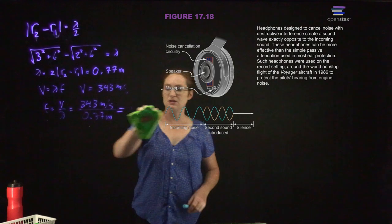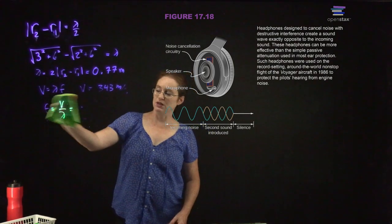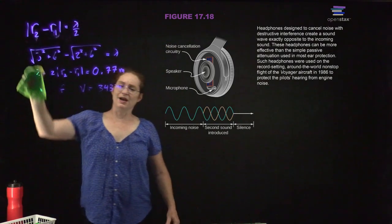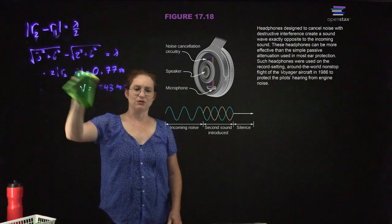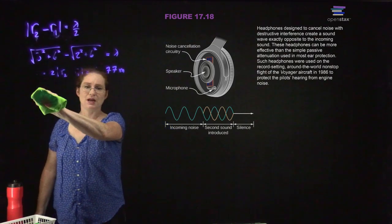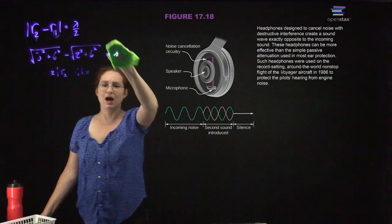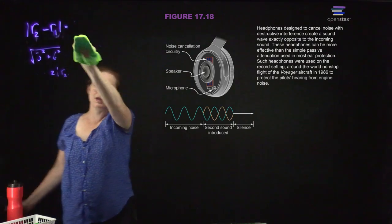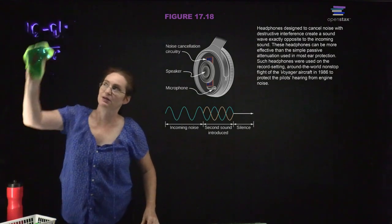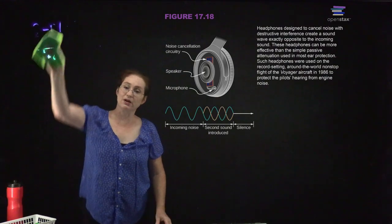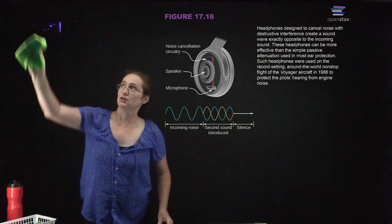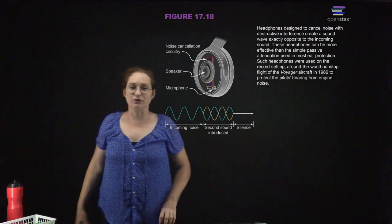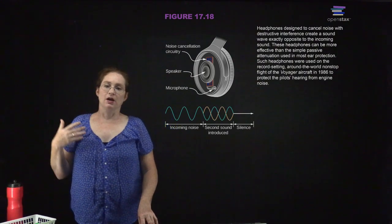An application of this interference is noise-canceling headphones. When these first came out in the mid-80s, no one had used them; now anybody can buy them. What happens in noise-canceling headphones is that they actually create a sound with the exact opposite amplitude of whatever sound is coming in, and the same intensity. In that case, they get destructive interference and you don't have to listen to the sounds around you. They're pretty good at canceling out softer noise — what we call white noise — which tends to be all sorts of frequencies.